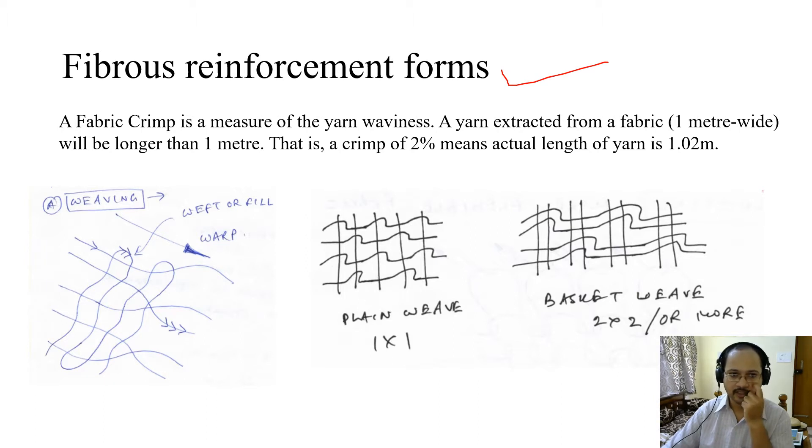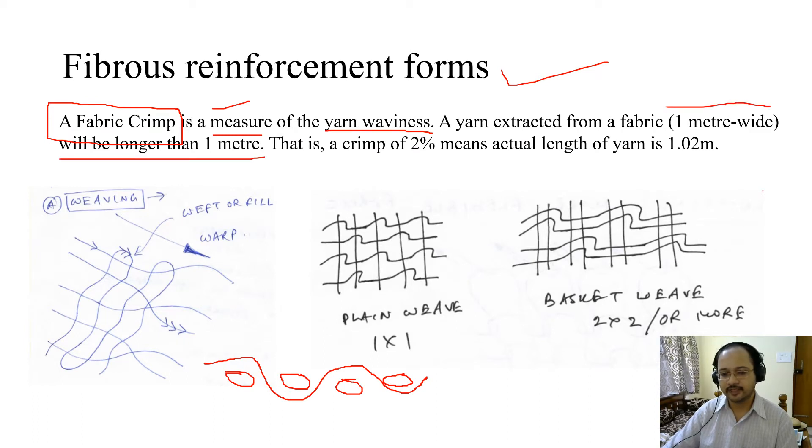Now coming to fibrous reinforcement forms. A fabric crimp is a measure of yarn waviness. If you look into the cross section of the yarn, there is waviness. These are the cross sections of the yarns in the transverse direction. A yarn extracted from a fabric which is 1 meter wide will be longer than 1 meter. Why? Because when we measure the dimension of the fabric, we're talking about this dimension. But in reality, because of this waviness, the yarns will be longer. A crimp of 2% means the actual length of the yarn is 1.02 meters.